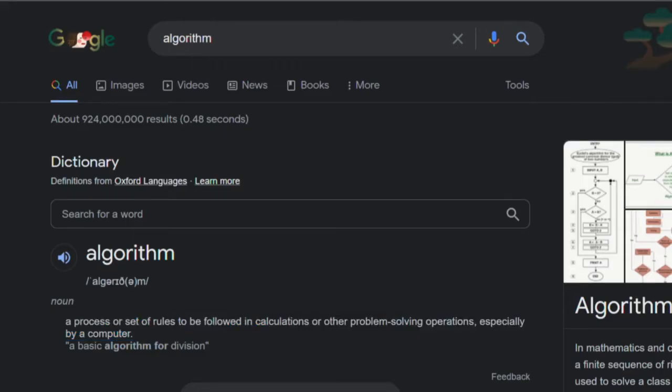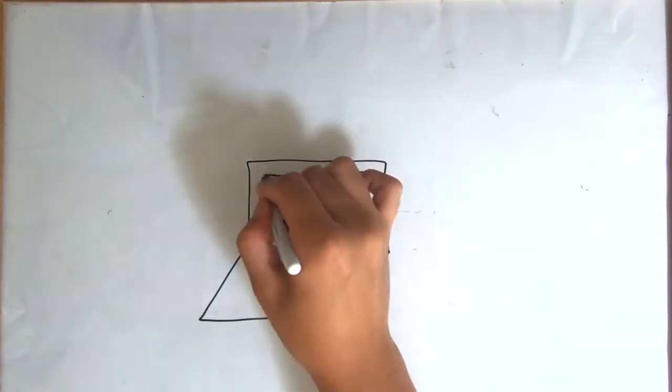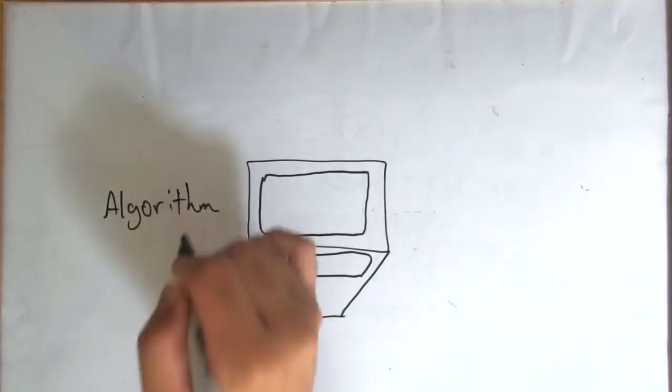A direct definition from Google points that an algorithm is a process or set of rules to be followed in calculations or other problem-solving operations, especially by a computer. So in simple terms, an algorithm is something you use so that a computer can do some calculations.